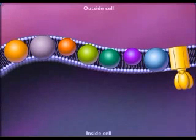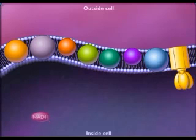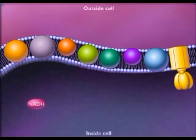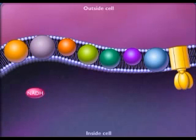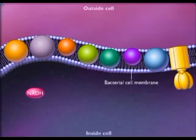During glycolysis and the tricarboxylic acid cycle, oxidation of organic molecules results in production of reduced coenzymes such as NADH. These coenzymes transfer hydrogens to the electron transport chain, which is located in the bacterial cell membrane.